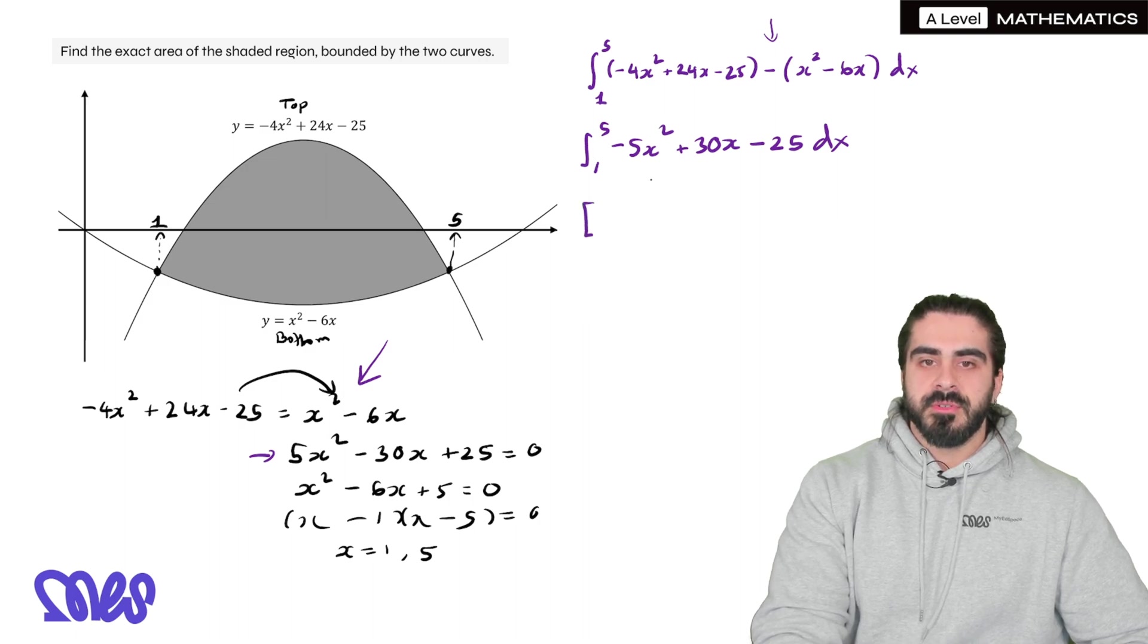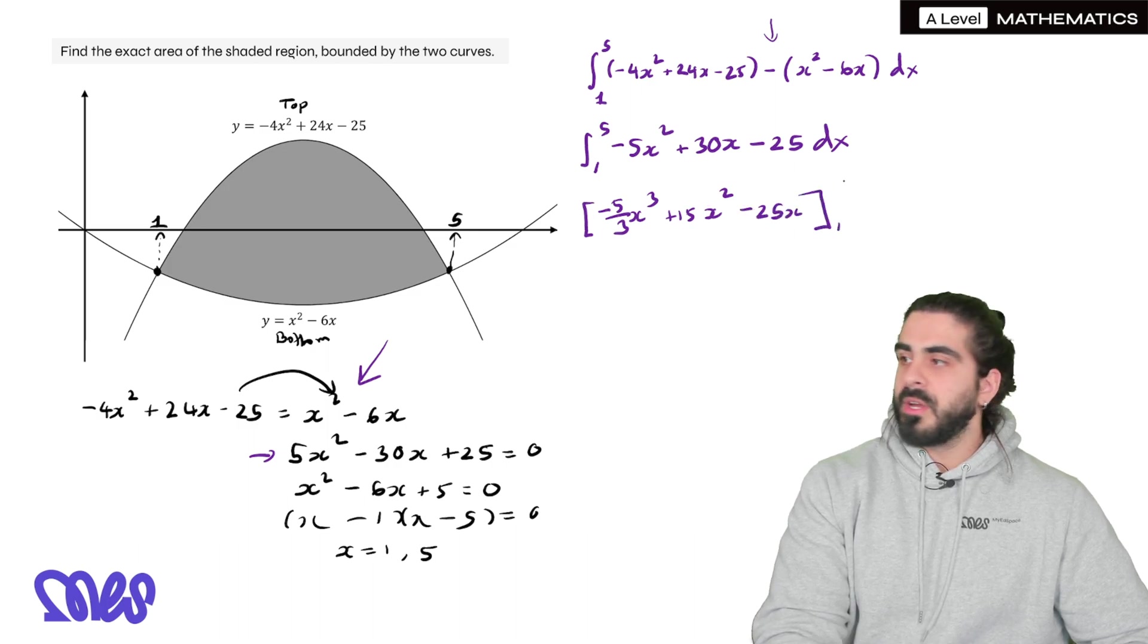Alright, so add 1 to the power. Then we do the previous number divided by the new power. Then we add 1 to the power. 30 divided by 2 is 15. And then we get -25x between 1 and 5.